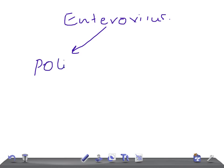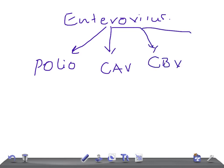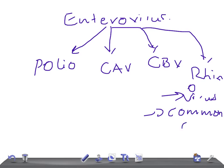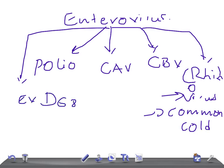Within enteroviruses, there are many serotypes. The clinically important ones include poliovirus, Coxsackievirus A, Coxsackievirus B, and rhinovirus. Rhinovirus is the most common cause of the common cold. One key point differentiating rhinovirus from other enteroviruses is that rhinovirus is not resistant to stomach acid — stomach acid can kill it — and it does not typically affect the gut.